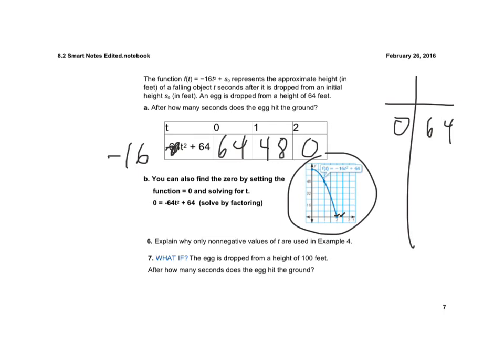And if the egg was dropped from 100 feet, then we'd just have -16t² + 100. And we'd again just plug values in for t until we get to 0, or we could set it equal to 0 and solve it that way.